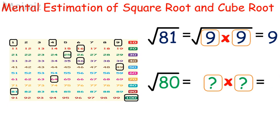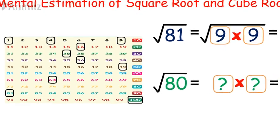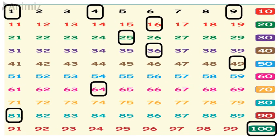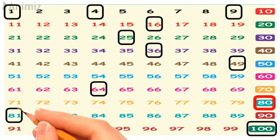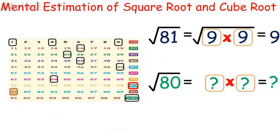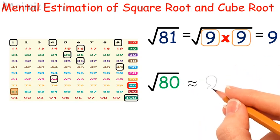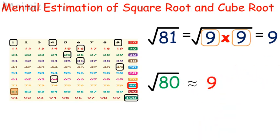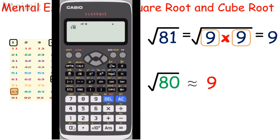Unfortunately, we cannot find the square root of 80 exactly, but we can estimate the answer. Let's have a look again at perfect squares — we are going to find the square root of 80. Is there any perfect square which is closer to 80? Yes, it is 81, and the square root of 81 is 9. So the estimated answer of the square root of 80 is 9. Let's check with a calculator — the exact answer is 8.94427191, which is very close to 9.